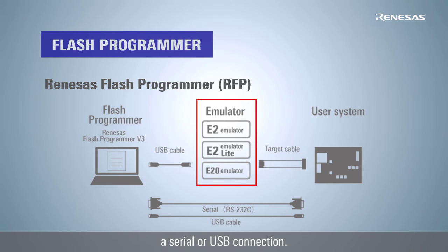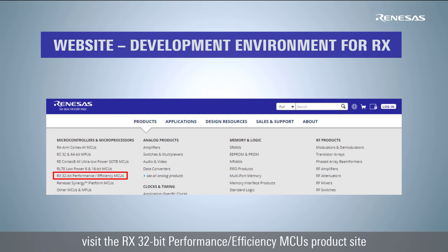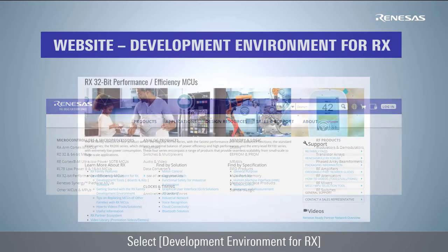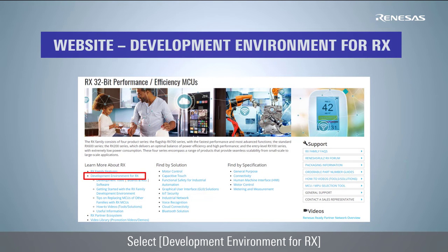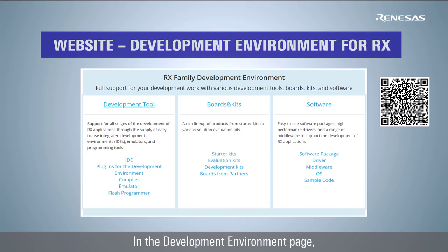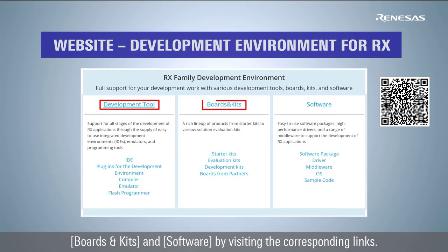For more information about tools and software for RX Family, visit the RX 32-bit performance/efficiency MCU product site at the Renesas website. Then select Development Environment for RX, or How-to videos, to get more tools information. In the development environment page, users can obtain more information about development tools, boards and kits, and software by visiting the corresponding links.